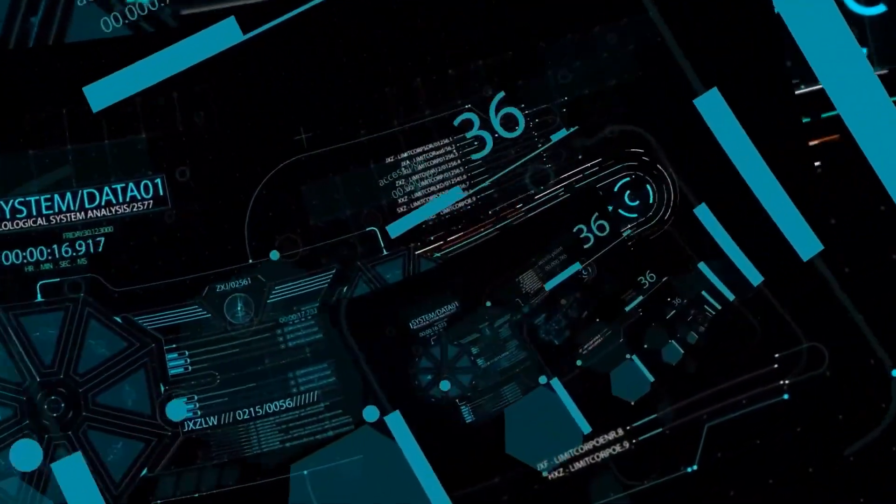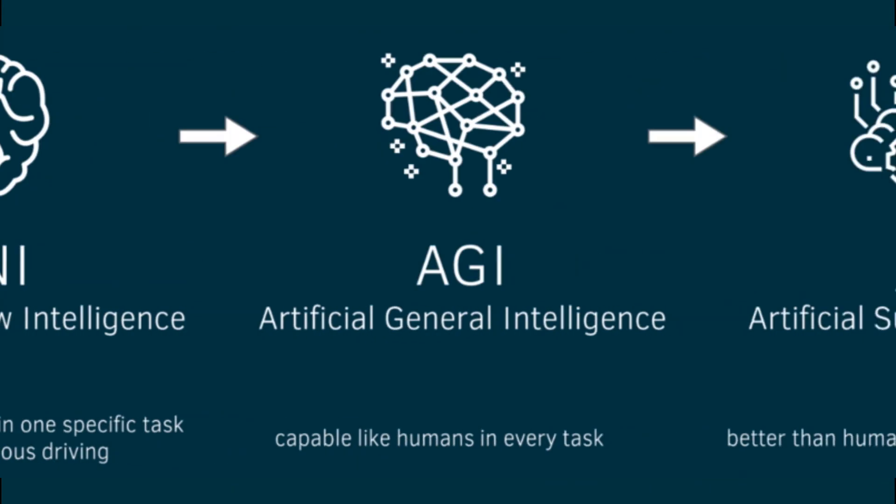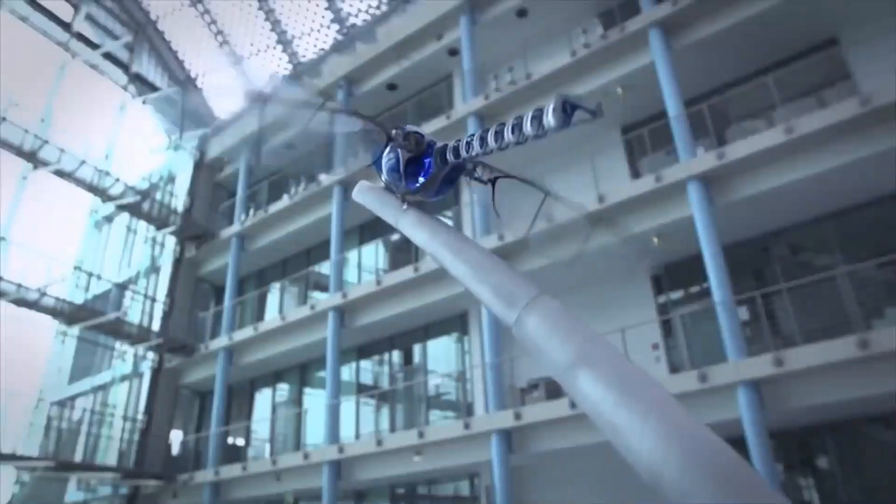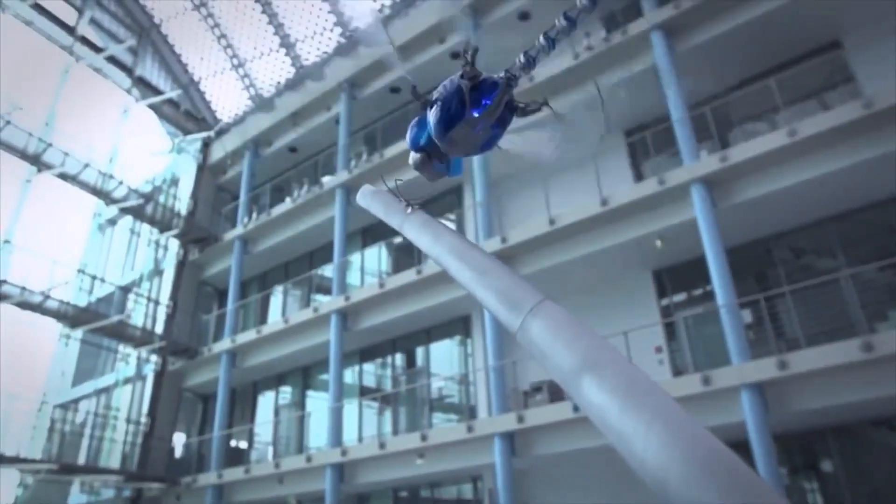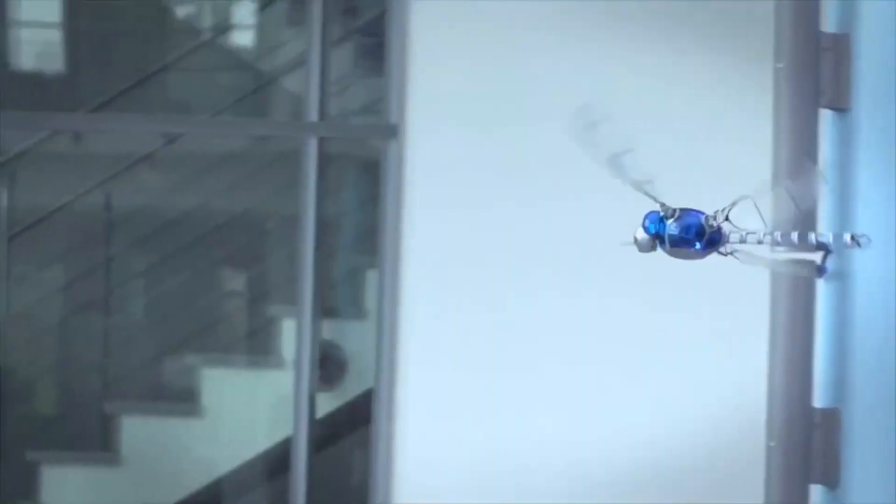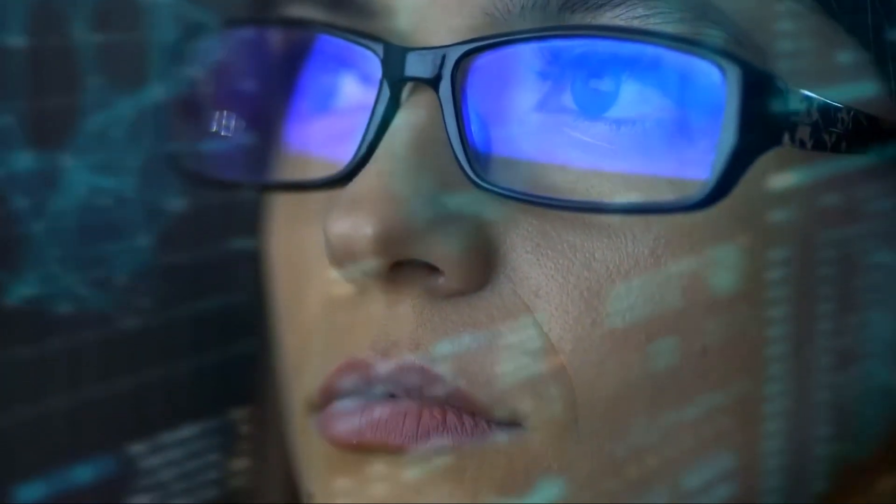Scientists believe that transitions between AI, AGI, and superintelligence could occur without our detection, and by the time we realize it, the singularity may be imminent. However, it is essential to understand what the singularity is and why its consequences would profoundly impact humanity.